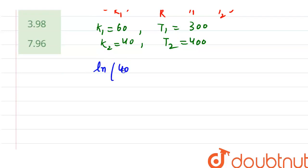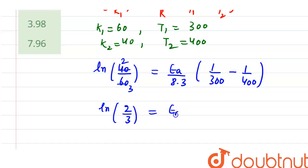ln(40/60) = (Ea/8.3) × [1/300 - 1/400]. So it is ln(2/3) = (Ea/8.3) × [1/300 - 1/400]